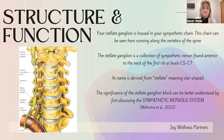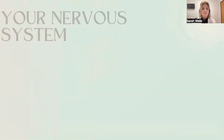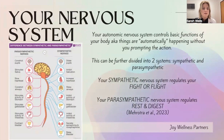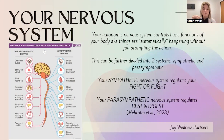The significance of the stellate ganglion block can be better understood by first discussing the sympathetic nervous system. Your autonomic nervous system controls the basic functions of your body automatically, without you having to consciously prompt it. It can be further broken down into two systems: the sympathetic and the parasympathetic.